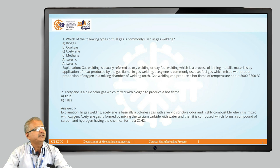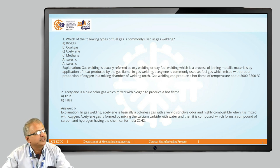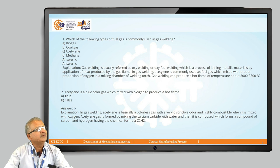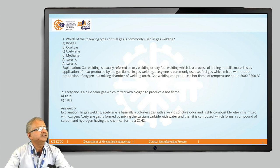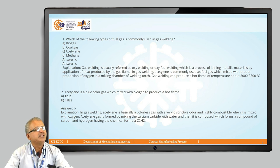Let us take a small quiz to check whether we correctly understood the gas welding process. Which of the following types of fuel gas is commonly used in gas welding? The four options are: biogas, coal gas, acetylene, and methane. The answer is C — acetylene — because gas welding is normally referred to as oxy welding or oxy-fuel welding, and most metals are processed by oxygen plus acetylene, with a temperature range of 3000 to 3500 degree centigrade.